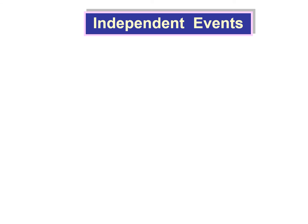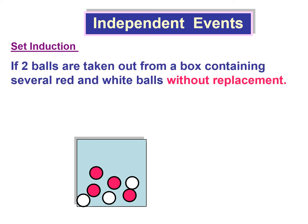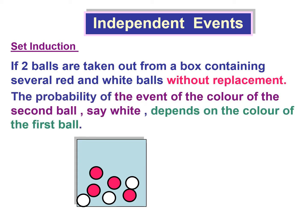Independent events. Let's say two balls are taken out from a box containing several red and white balls without replacement. The probability of the event of the color of the second ball, say white, depends on the color of the first ball.